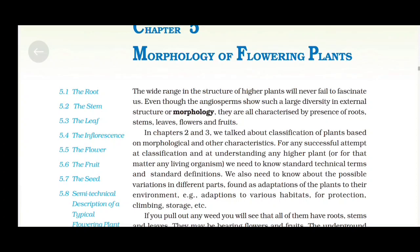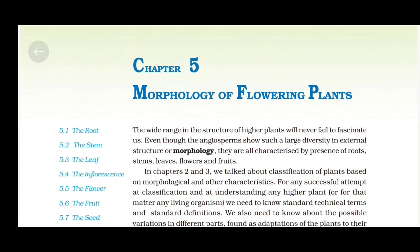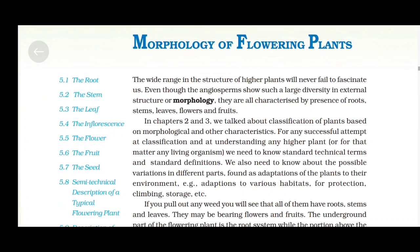Chapter 5: Morphology of Flowering Plants. The wide range in the structure of higher plants will never fail to fascinate us. Even though the angiosperms show such a large diversity in external structure or morphology, they are all characterized by presence of roots, stems, leaves, flowers and fruits. In Chapters 2 and 3, we talked about classification of plants based on morphological and other characteristics. For any successful attempt at classification and understanding any higher plant, or any living organism, we need to know standard technical terms and standard definitions.